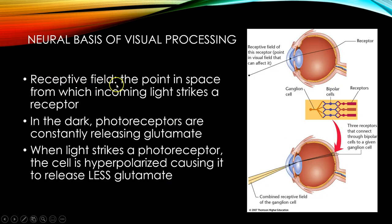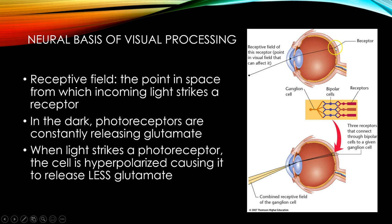We talked about receptive fields. That's the point in space from which incoming light strikes a receptor. A point in space reflects light past our cornea, through the pupil, through the lens, and it hits a particular receptor in the retina. That is the receptive field — this point of light — for that particular receptor.